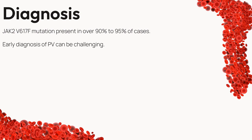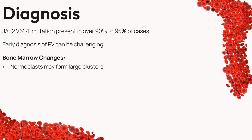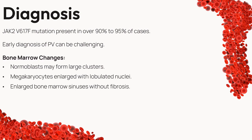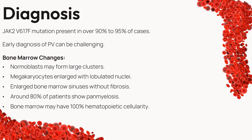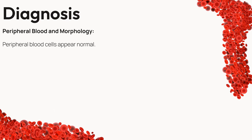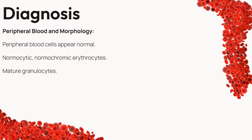Yet challenges linger — early diagnosis can be intricate, especially when other conditions cloud the picture. The bone marrow often presents unique changes: normoblasts may cluster, megakaryocytes can enlarge, and bone marrow sinuses may expand without fibrosis. Around 80% of patients show panmyelosis, and bone marrow may have 100% hematopoietic cellularity. A look at peripheral blood reveals seemingly normal cells — normocytic, normochromic erythrocytes, mature granulocytes, and normal-sized, granulated platelets.